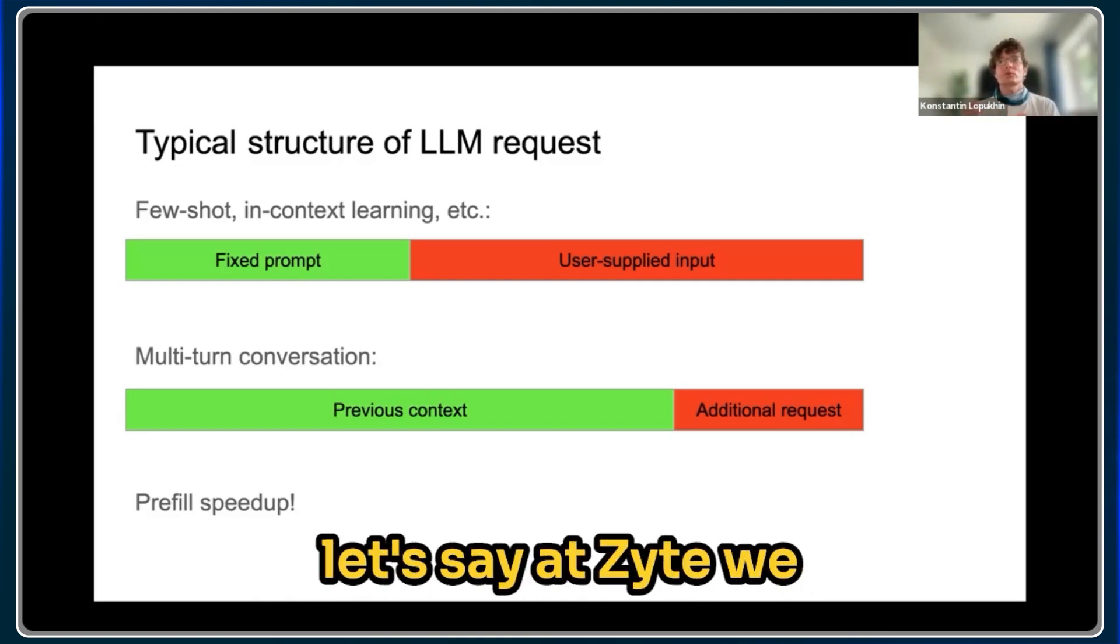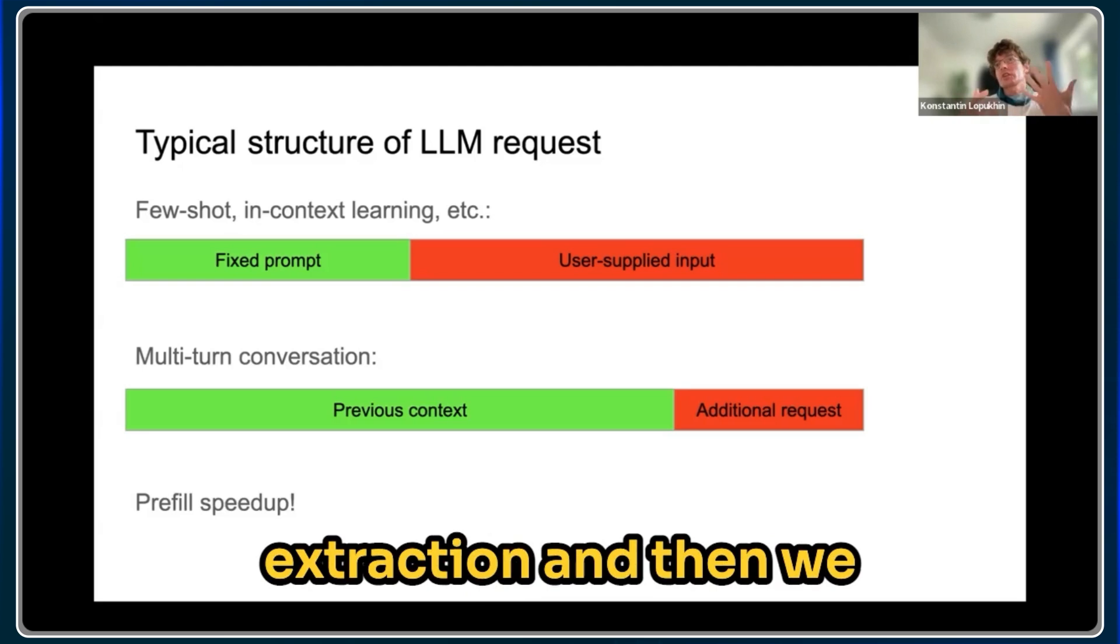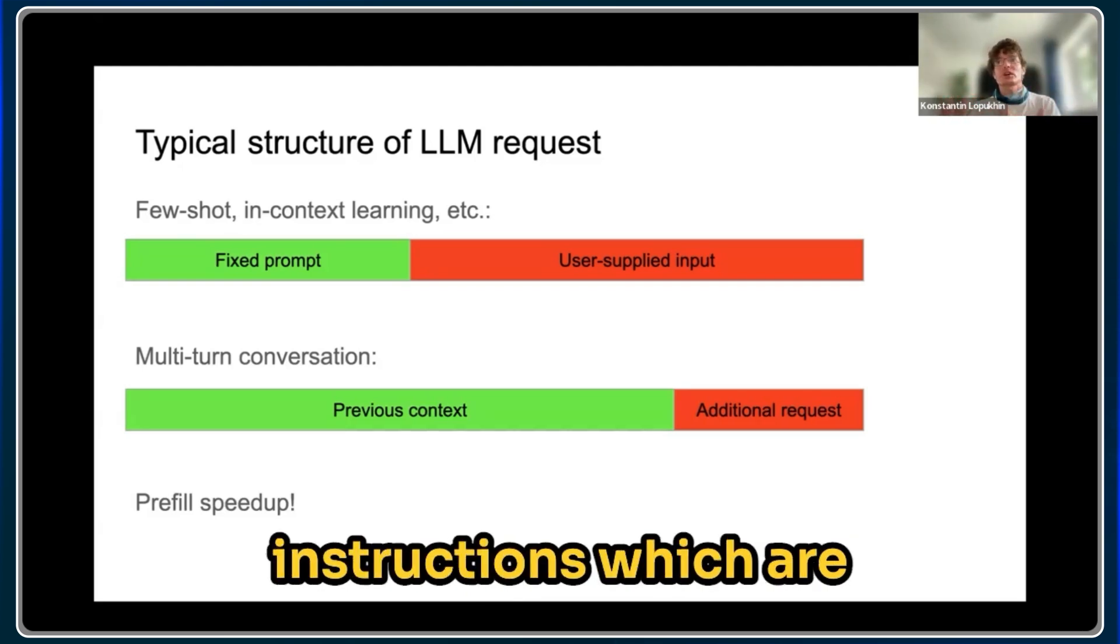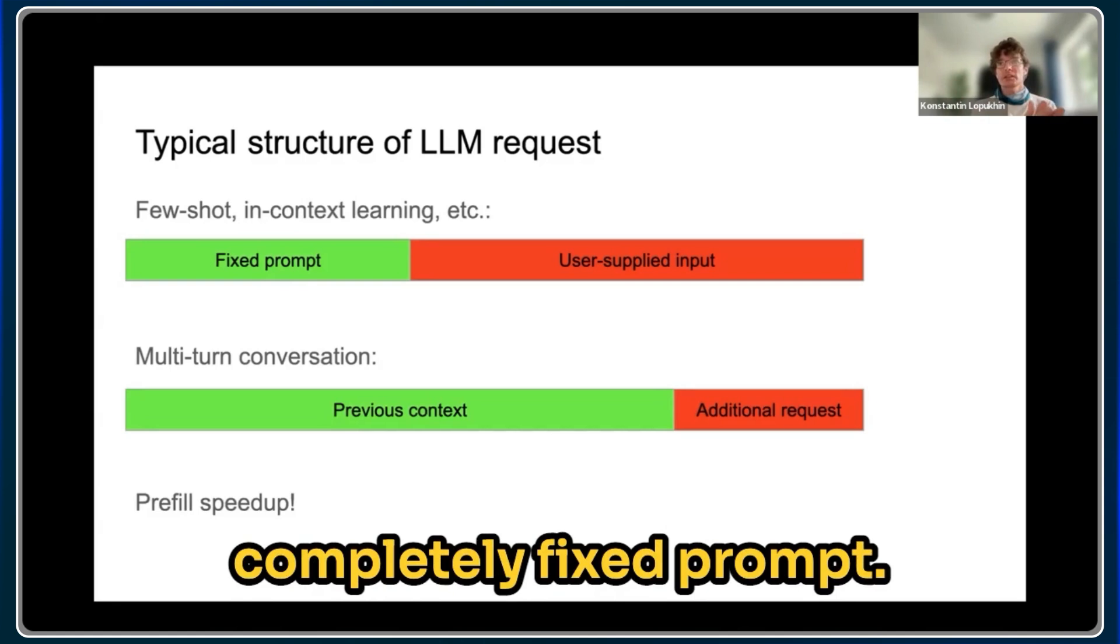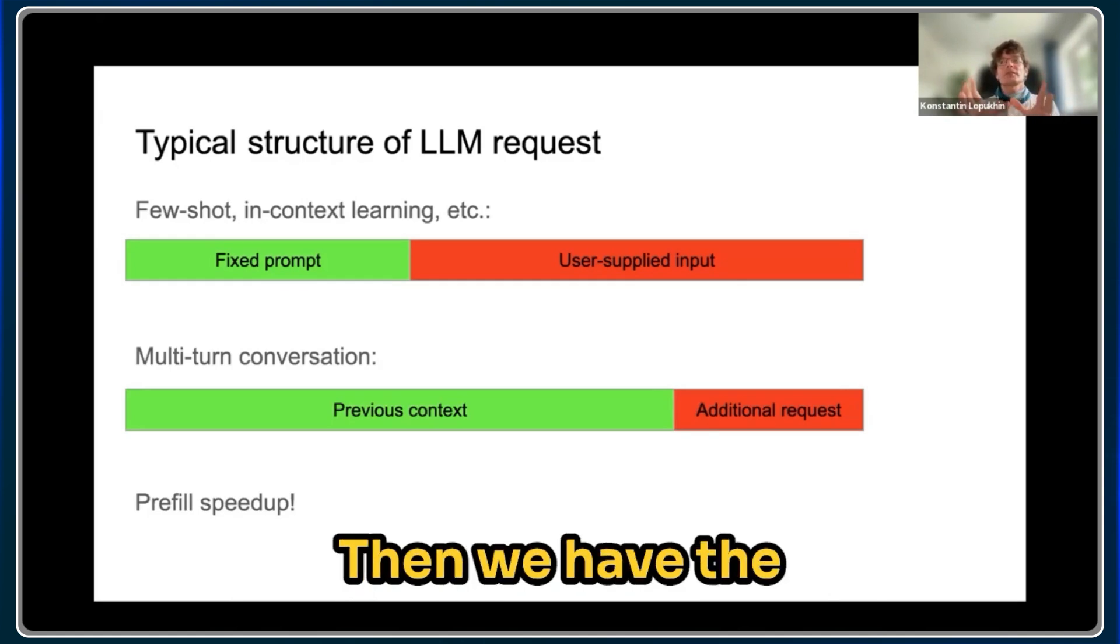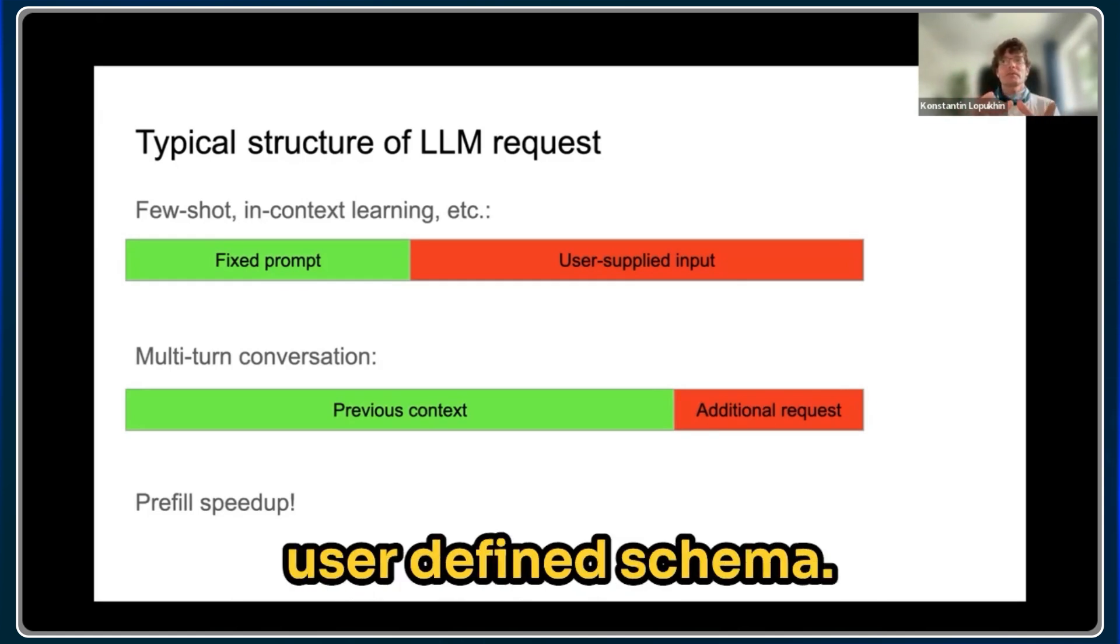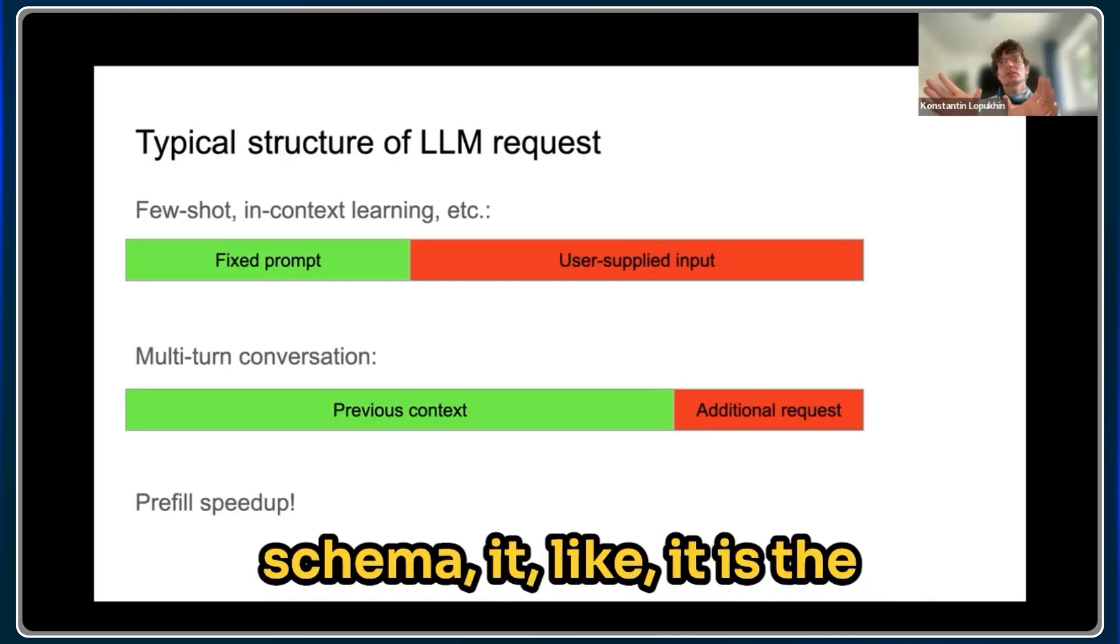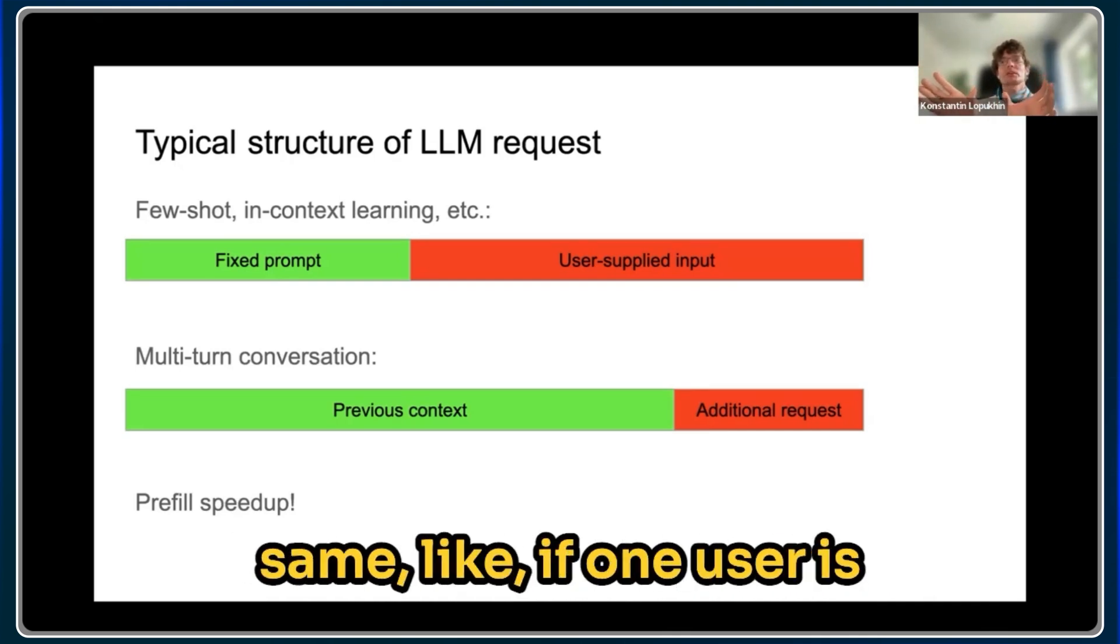So in a more niche example, at Zeit we do custom attribute extraction and we would have first general instructions which are applied to any task—a completely fixed prompt. Then we have the user-defined schema, and then we have the input from the web page. Now, the user-defined schema is the same—